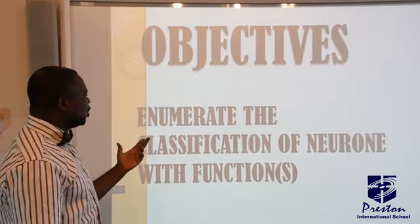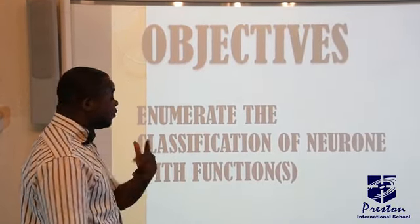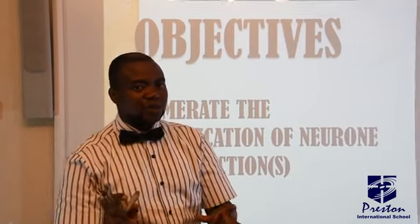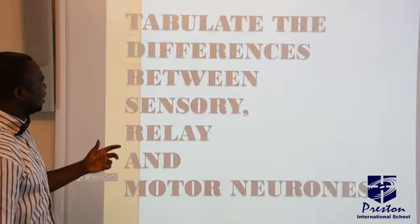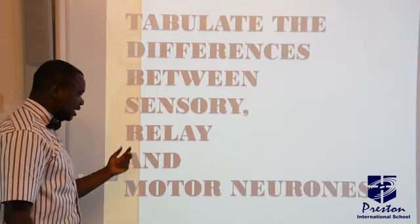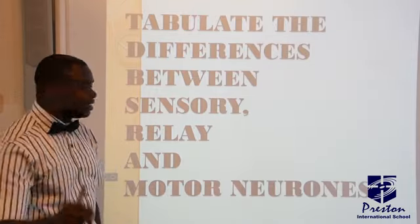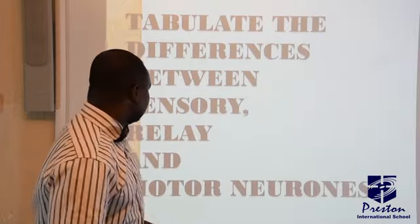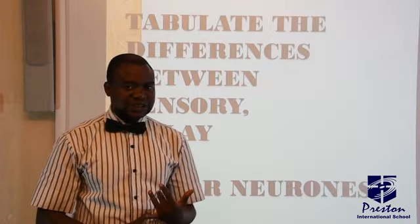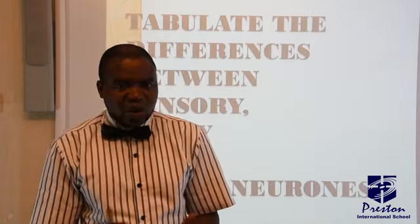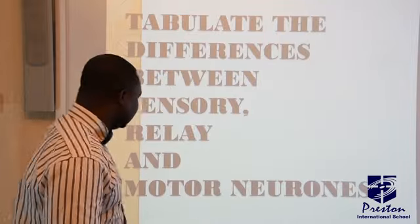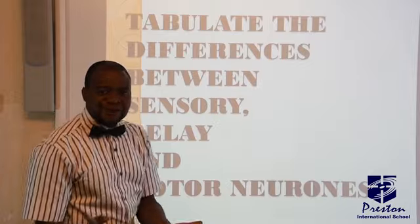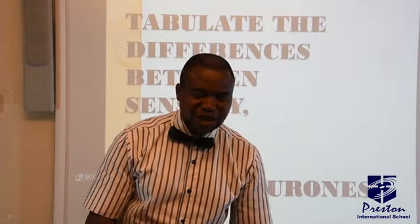Today we shall be looking at: number one, the classification of neurons with their functions; number two, the types of nerve cells with examples and functions; and number three, the differences between sensory, relay, and motor neurons. Sensory neurons are also called afferent neurons, relay neurons are also called associate, intermediate, or interneurons, and motor neurons are called efferent neurons.